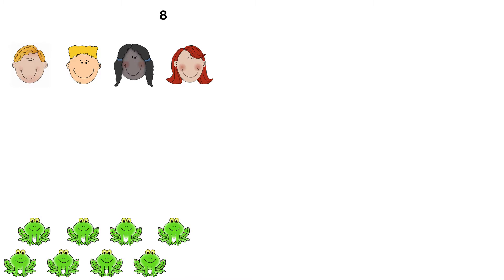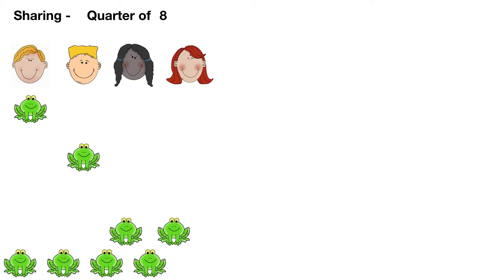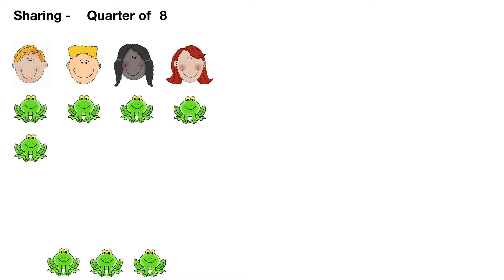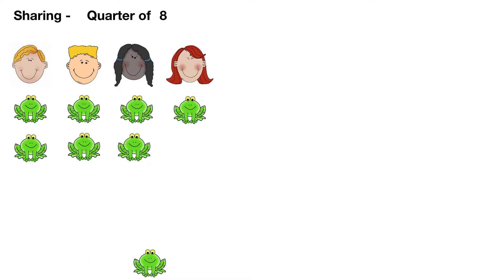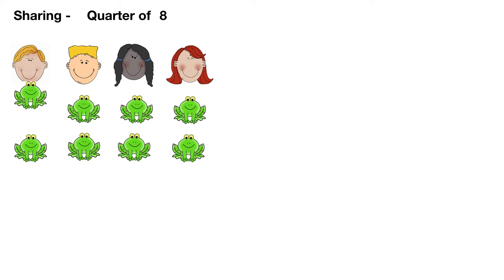Dan has eight frogs. A quarter of them catch flies. How many frogs catch flies? We can find a quarter of eight by sharing between four like this, so each person gets the same number of frogs. Now we count how many frogs one person has. Dan has two frogs, so a quarter of eight is two.